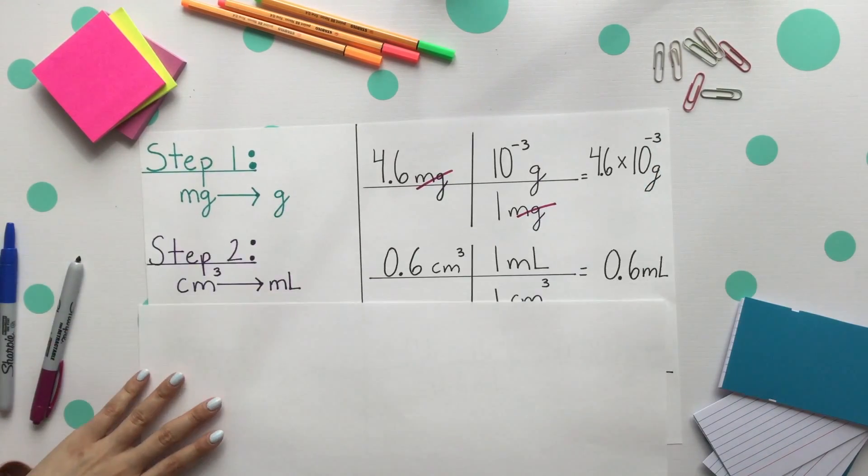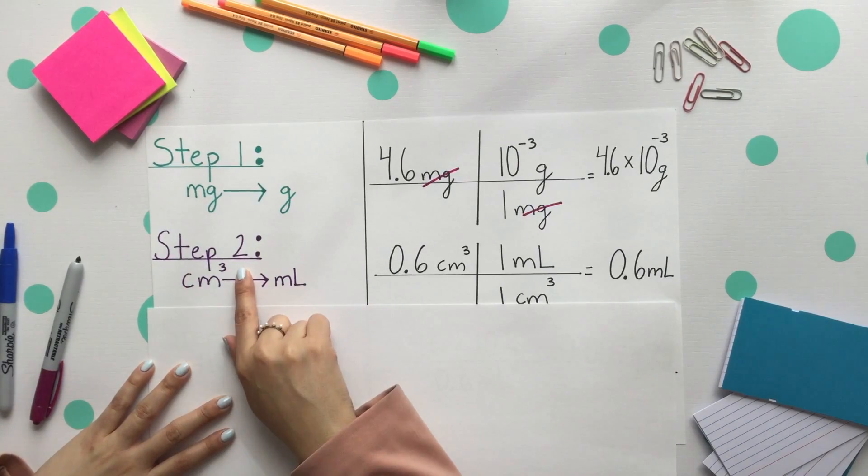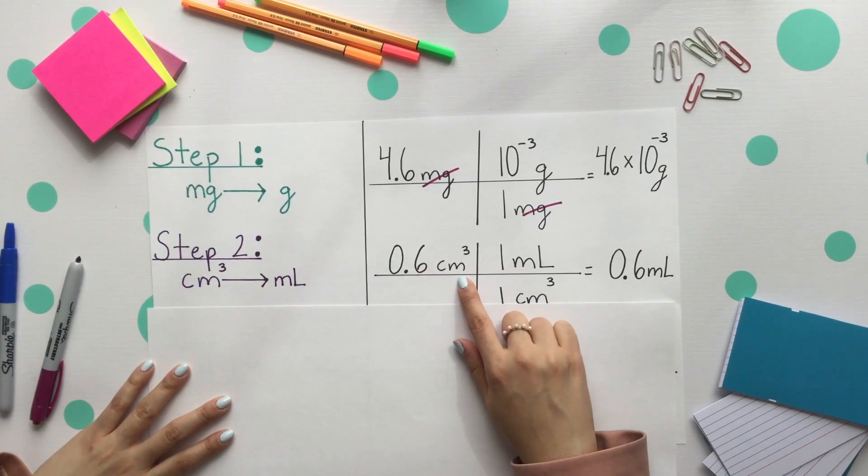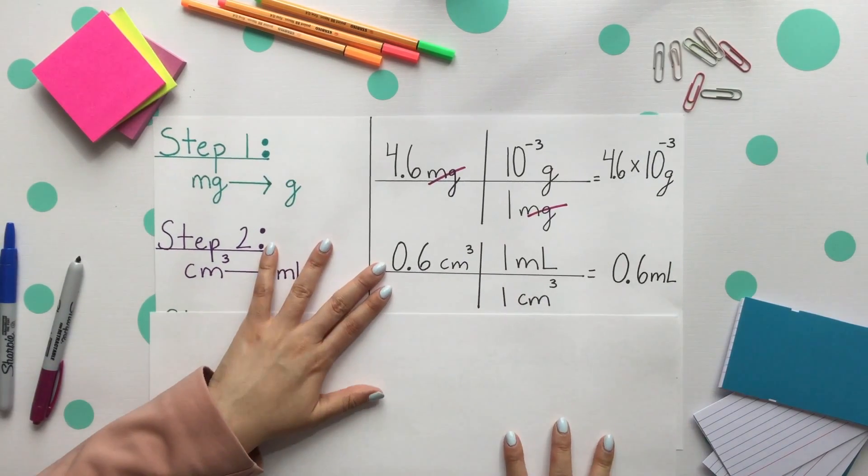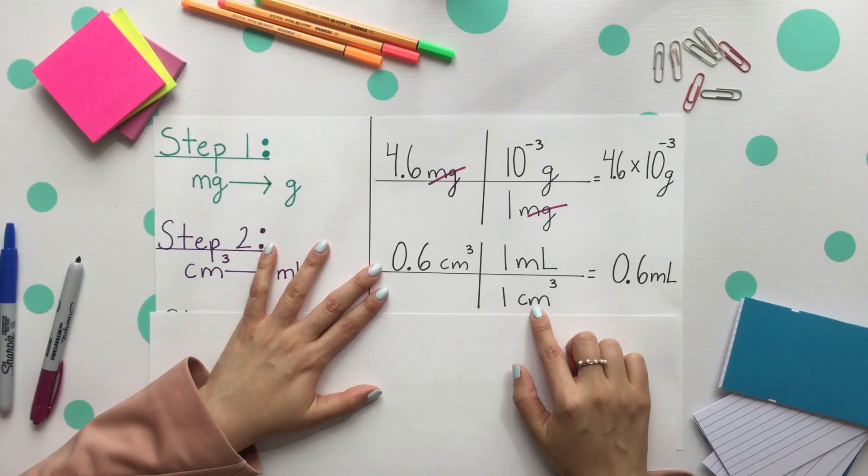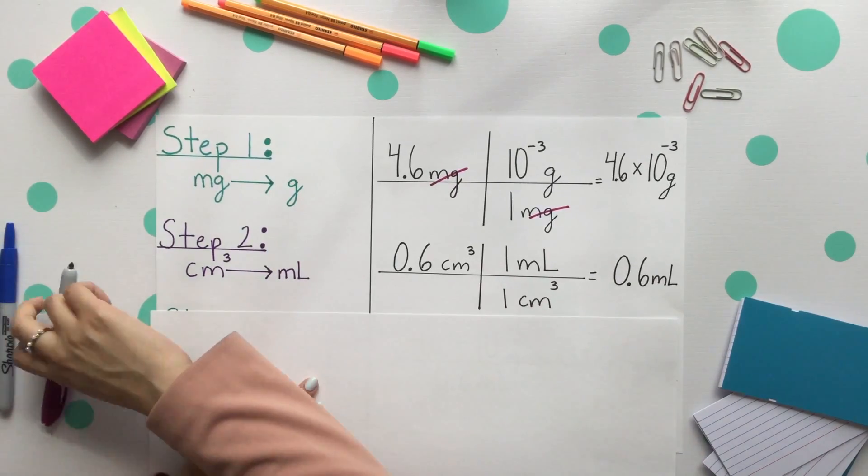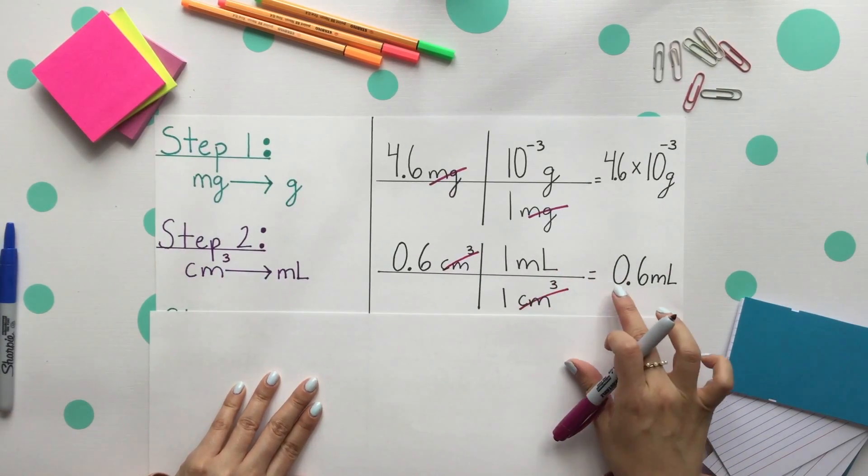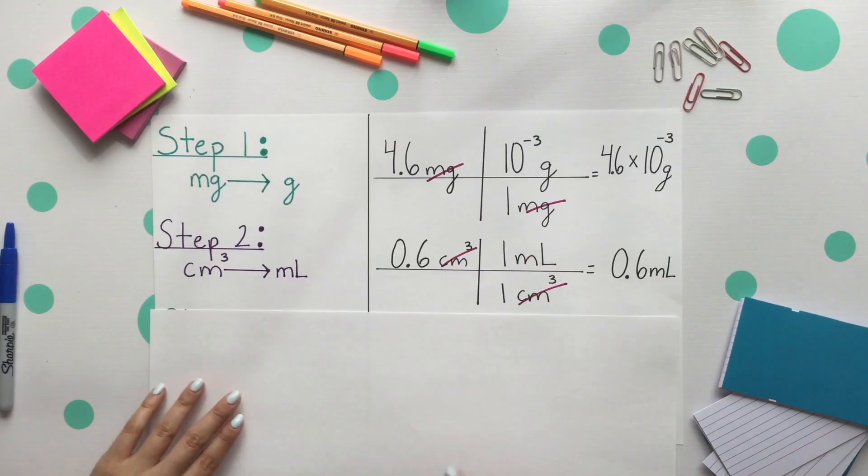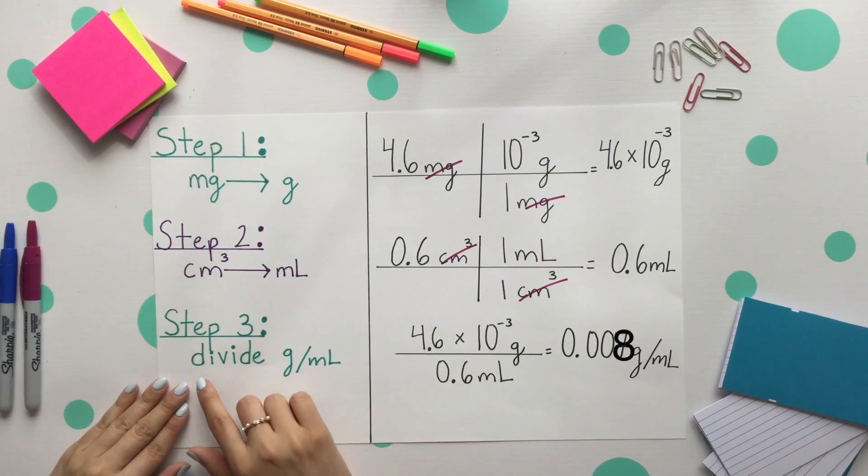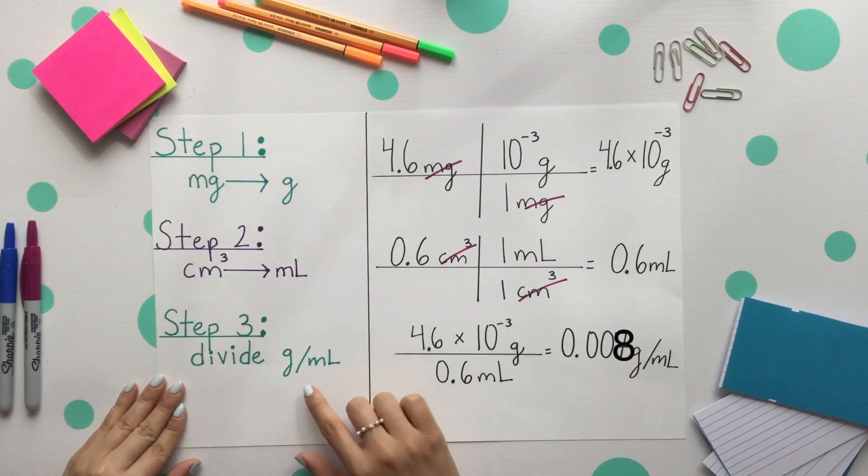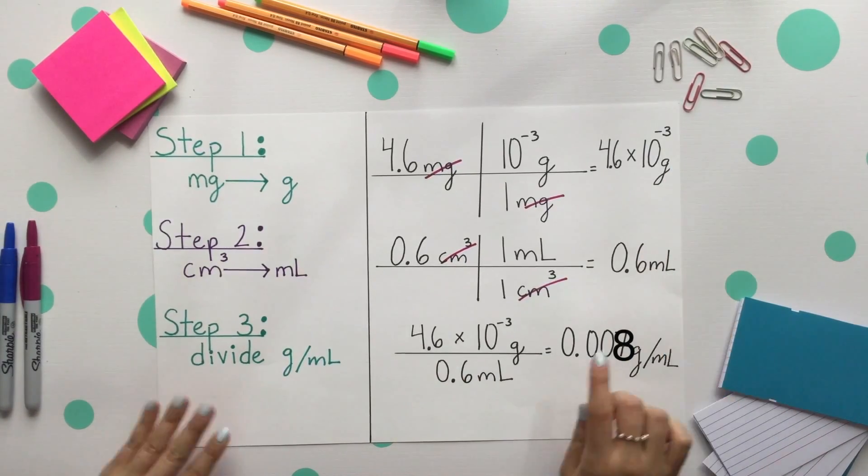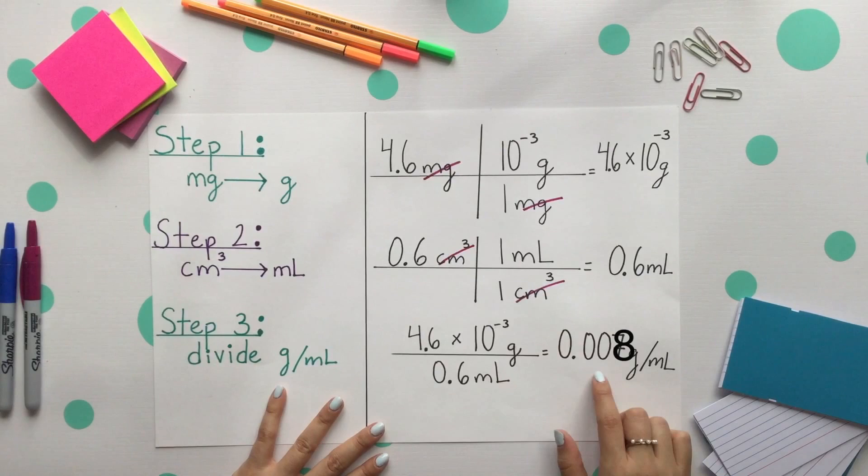Step two: we'll take our cubic centimeters and convert them to milliliters. That 0.6 cubic centimeters then gets aligned with our conversion factor of one cubic centimeter to one milliliter. And our last step is just to divide our grams divided by our milliliters. So step one divided by step two, we'll end up getting grams per milliliter.